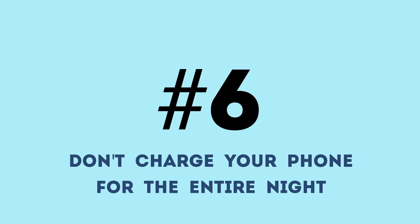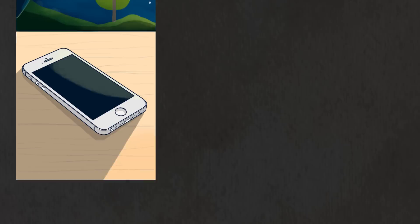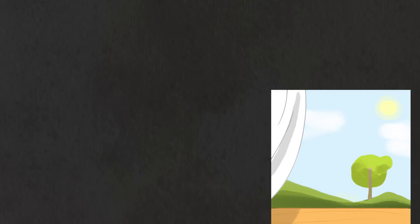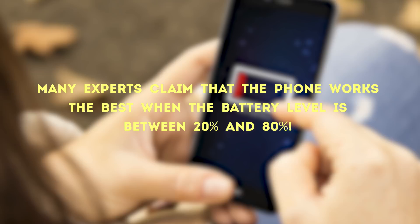Number 6: Don't charge your phone for the entire night. This topic can be quite controversial, but many professional magazines write that if you leave your phone charging for the entire night, the battery life will decrease. Of course, it's very tempting to leave your phone charging in the evening and be able to use a fully charged phone in the morning. However, if you disconnect the iPhone charger before the battery level reaches 100%, the battery will live a longer and happier life. Besides, many experts claim that the phone works the best when the battery level is between 20% and 80%. Well, I guess we should all reconsider our phone charging habits.